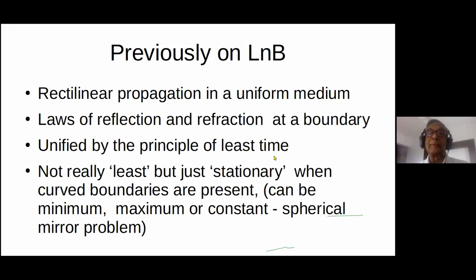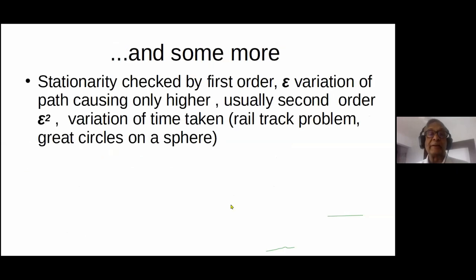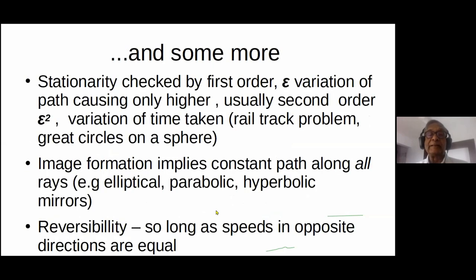We'll see more possibilities as we go along. It could be constant, which is an interesting case. One consequence of the Fermat principle is the principle of reversibility of light waves. Because when we calculate the total time taken to go from A to B, that would be the same as the time taken to go from B to A, provided the speed of light is the same moving in a given direction and in the reverse direction. There are interesting situations where that does not happen, but we're not going to get into that right now.